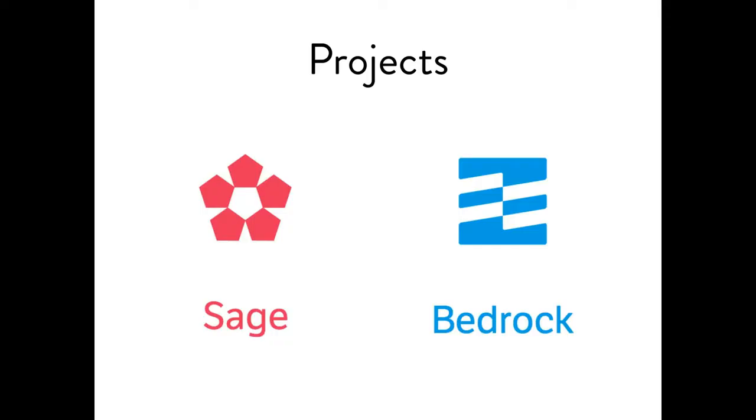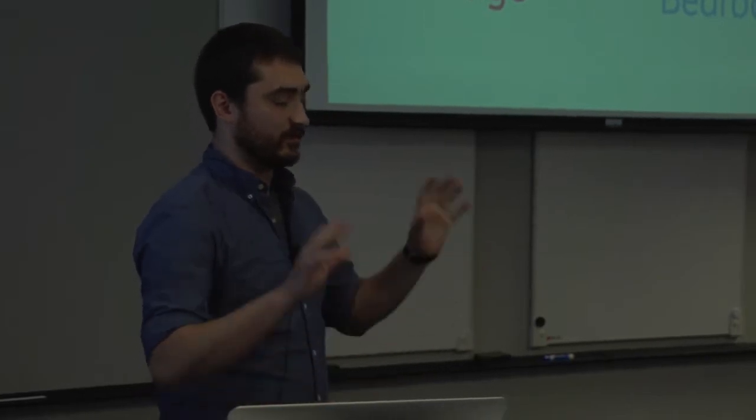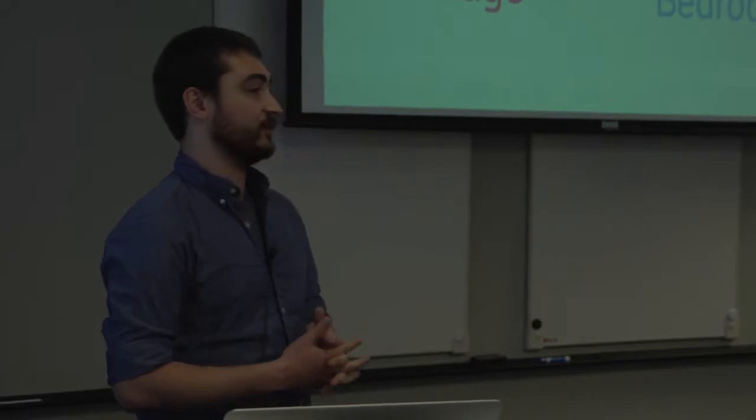There are two big projects we maintain, plus a couple smaller repositories on GitHub. If you're wondering what a repository is, it's just a place that holds code — you can download a zip or use Git. We have Sage, which used to be called Roots — it's a starter theme that helps you build websites faster with modern development tools. And Bedrock, which is a Vagrant Box Ansible playbook — a really awesome hosting stack for WordPress that you maintain yourself or use as your development environment.